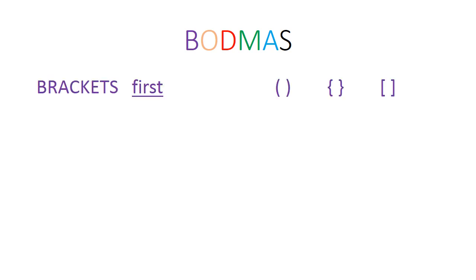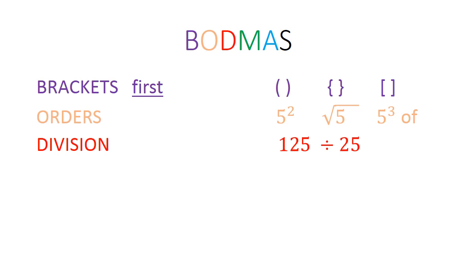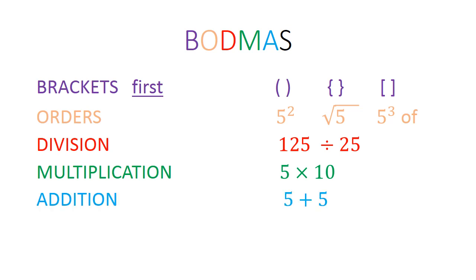Bad math is an acronym for orders of operation. Brackets first. Orders refers to roots and powers. Division — any division sum. Multiplication — any multiplication. Addition and subtraction.